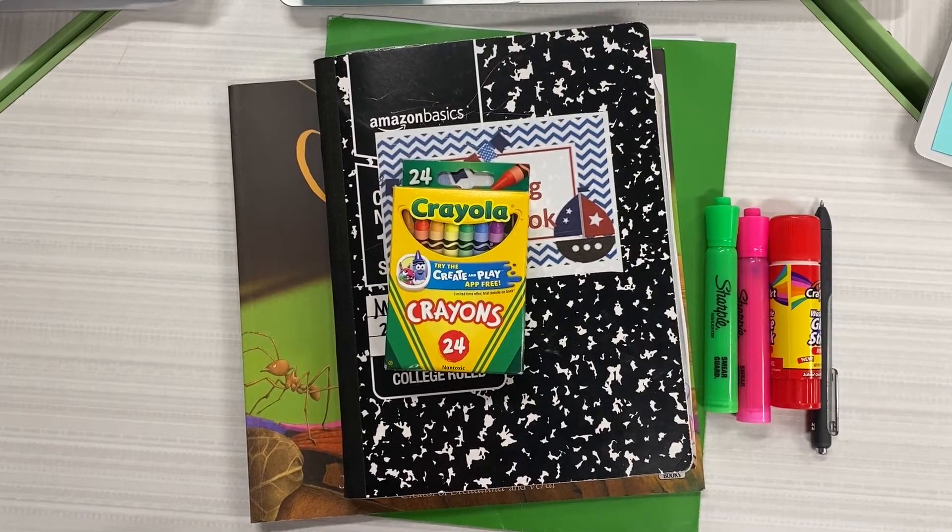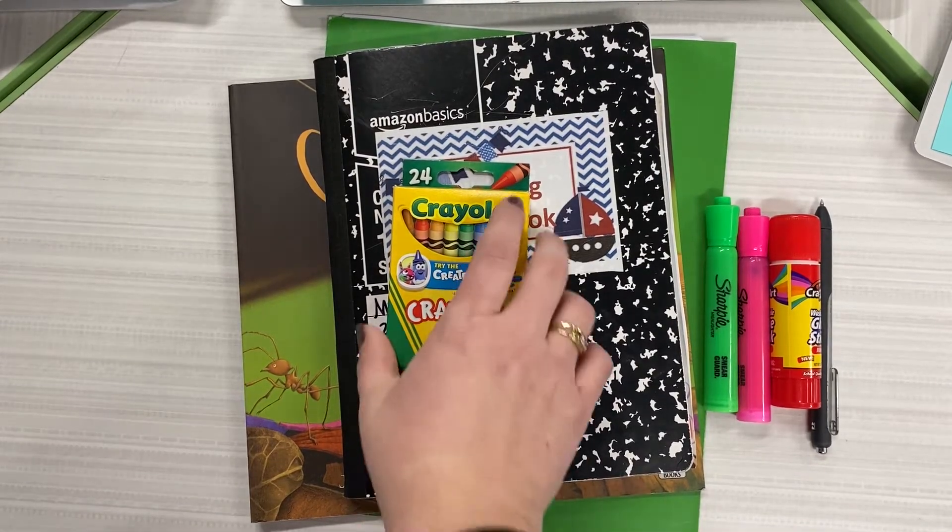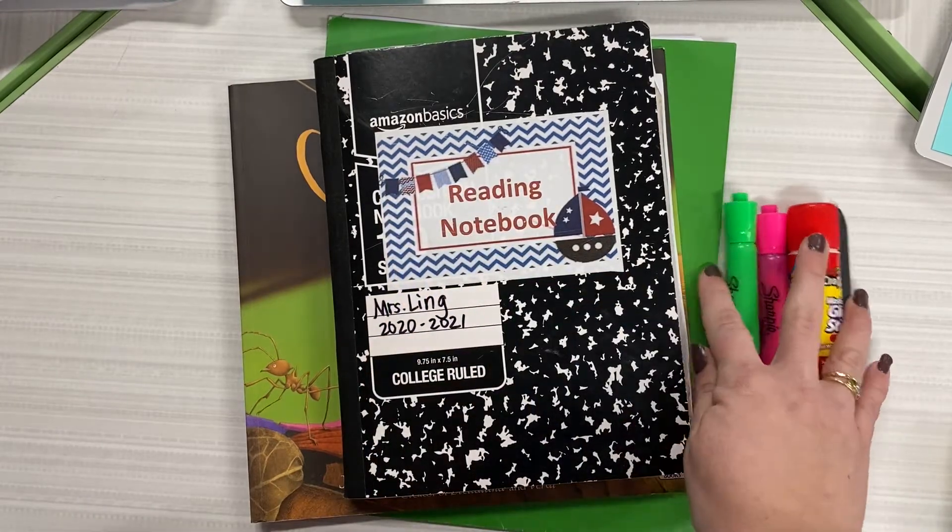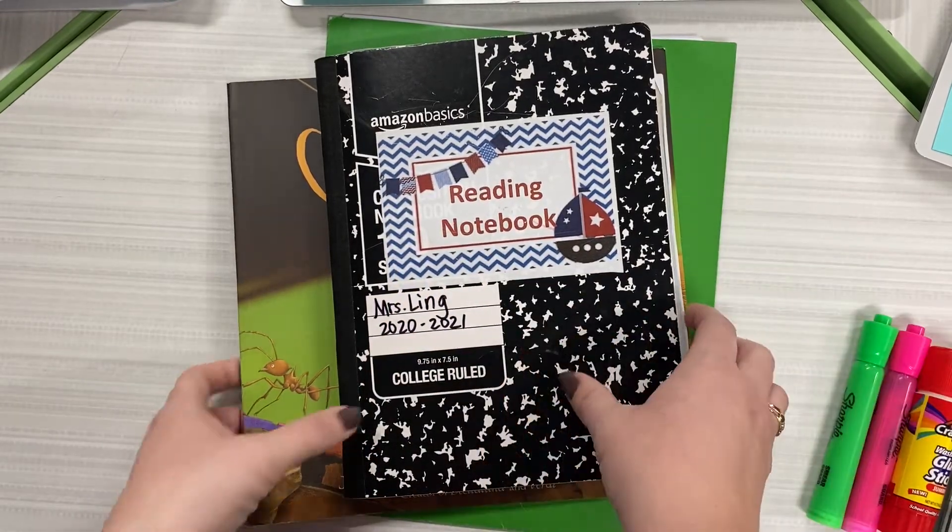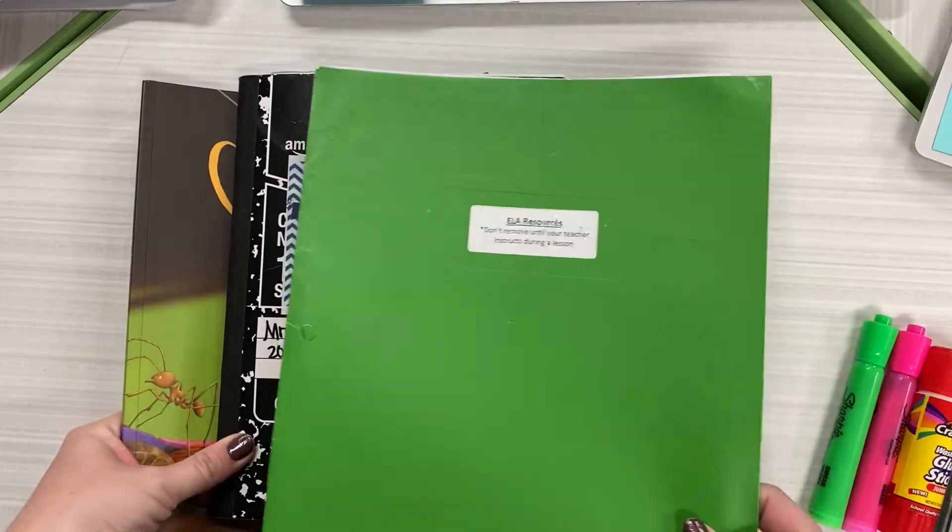Happy Wednesday readers! Today for Reading Workshop you're going to need a box of crayons, highlighters, glue stick, and a pencil, your reading notebook, and your green ELA resource folder.